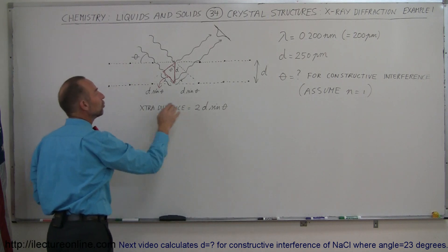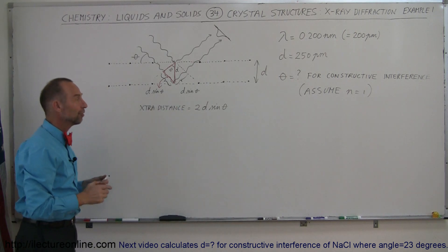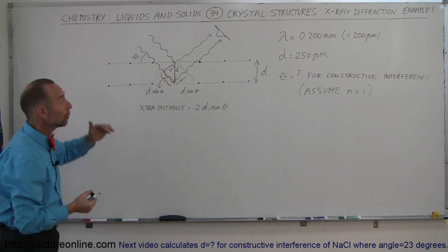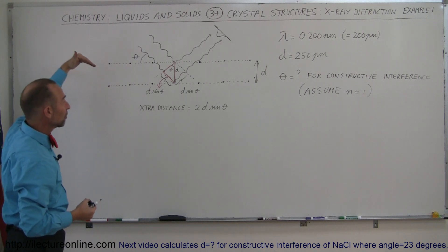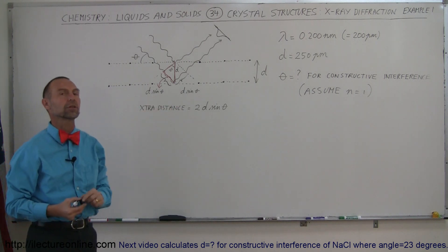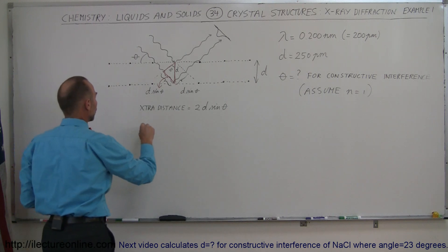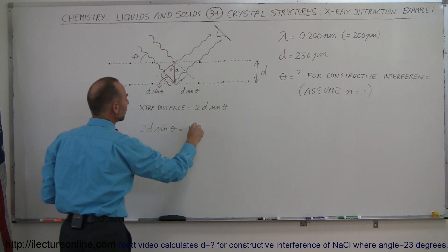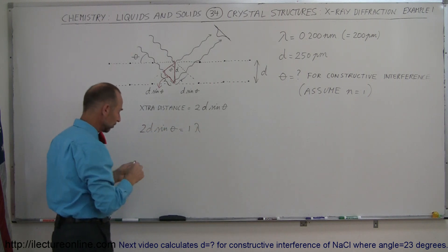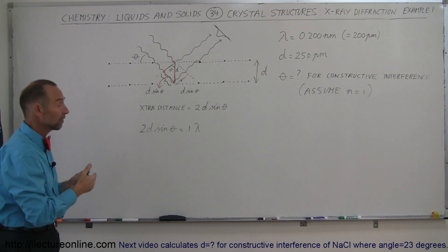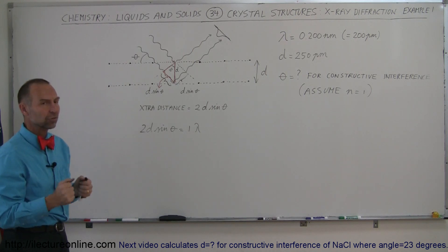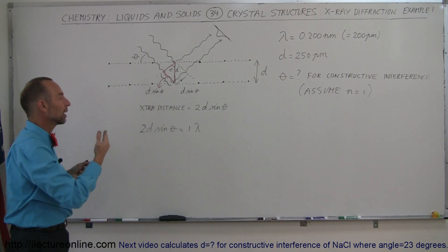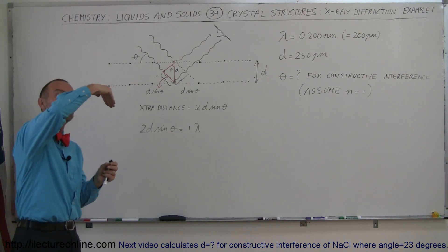So the total extra distance traveled is 2D sine theta. If we set that distance equal to one wavelength, we can solve the equation for theta — in other words, what angle does the beam have to approach the crystalline structure at in order to get constructive interference? Of course, if it equals two or three wavelengths, we'll also see constructive interference, but there may be limitations on how many orders we can achieve as we change the angle.